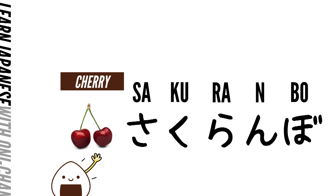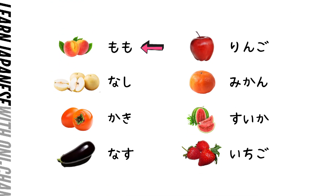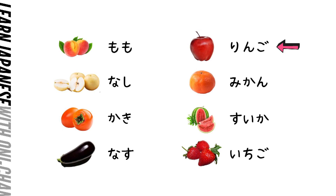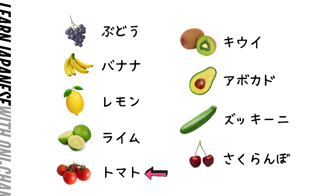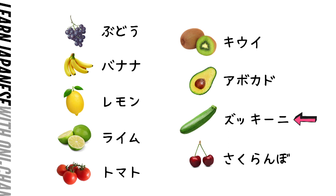Now let's review all the fruits in Japanese: モモ, ナシ, カキ, ナス, リンゴ, ミカン, スイカ, イチゴ, ブドウ, バナナ, レモン, ライム, トマト, キウイ, アボカド, ズッキーニ, サクランボ. Good job!